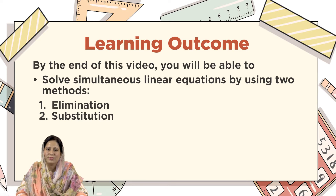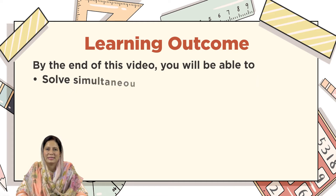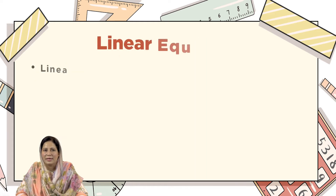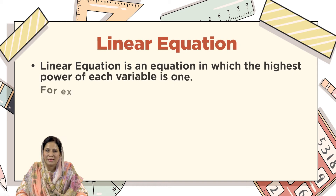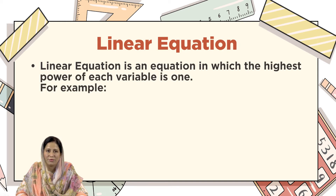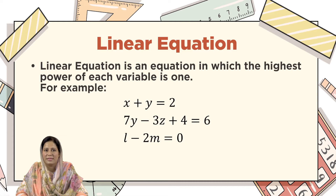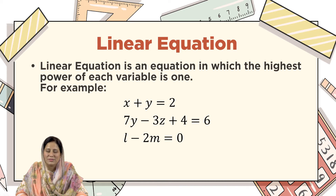Before going to understand simultaneous linear equations, first of all we will look at the linear equation. A linear equation is an equation in which the highest power of each variable is 1. For example: x plus y equals 2; 7y minus 3z plus 4 equals 6; l minus 2m equals 0. In all these three examples, you can see that each variable has highest power 1.